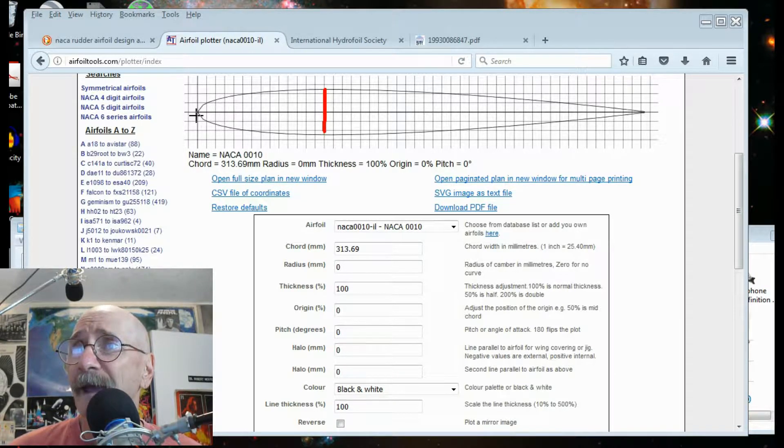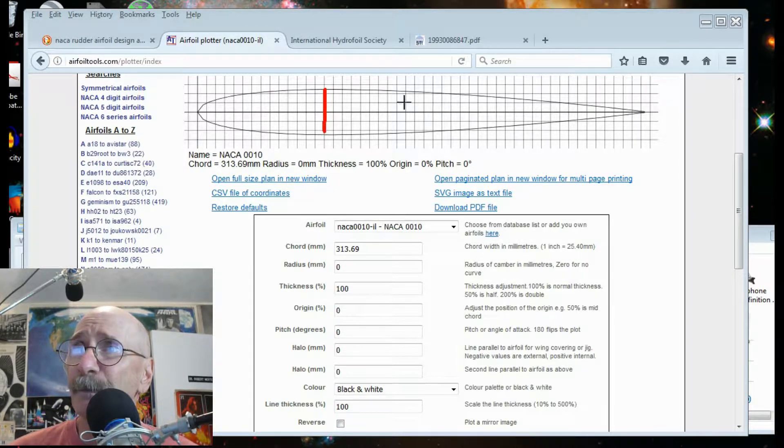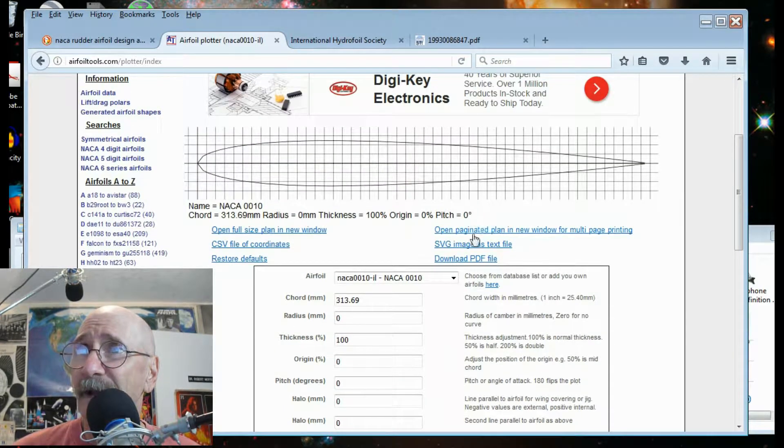It's also a 0010, which is 30%. The thickest part is 30% back from the leading edge. So the foil starts here, and the trailing edge is over here. This is what I want to print out.